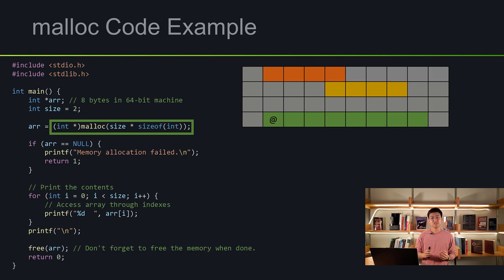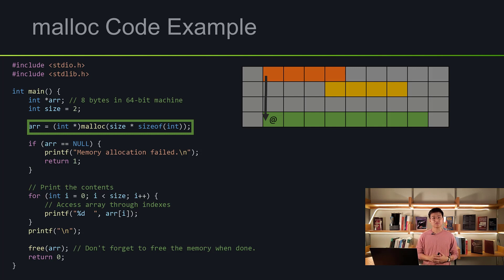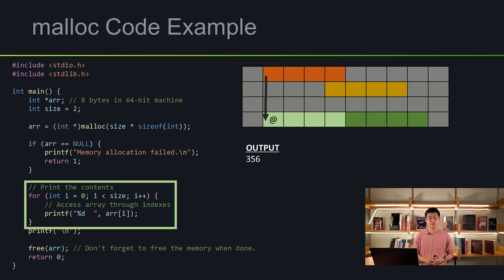R is set equal to our dynamically allocated space. As you can see on screen, R is now pointed to the green space — the space we just allocated. After that, I have an if statement just to check if the memory allocation worked successfully. Then I made a for loop to traverse the newly allocated space. Because we used malloc, this will print out garbage values that we didn't initialize.